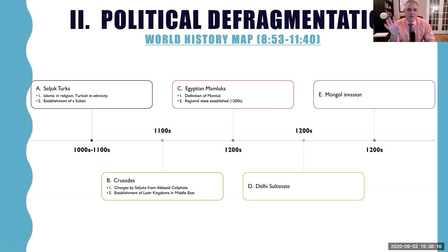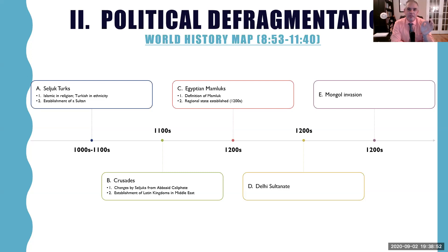One group is called the Seljuk Turks. They are Muslim but a different ethnicity — Turkish — coming from the Central Asian region. They are nomadic, strong warriors, and horseback armies who establish a central government and create the title of Sultan as the political leader. The Caliph, who used to be the political leader, is reduced to religious leadership only. In a way, the whole concept of the Caliph is starting to come to an end.